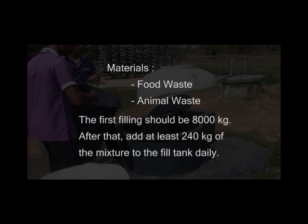The materials used to fill the biogas plant are usually food waste and animal waste. The first filling should contain 8,000 kg of waste mixture. After that, add at least 240 kg of waste mixture to the fill tank daily.